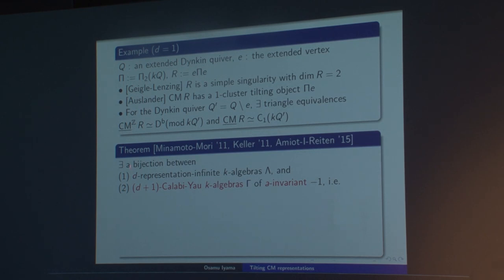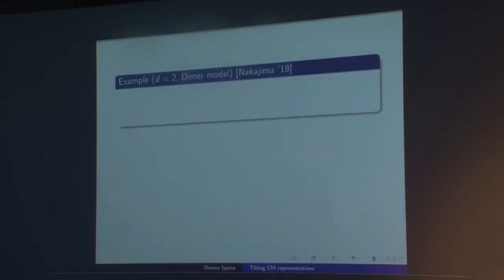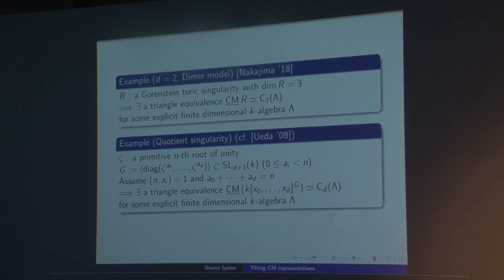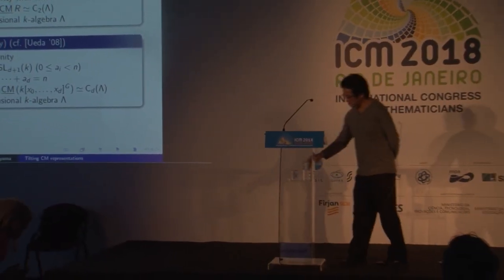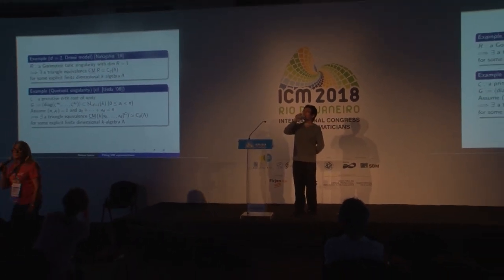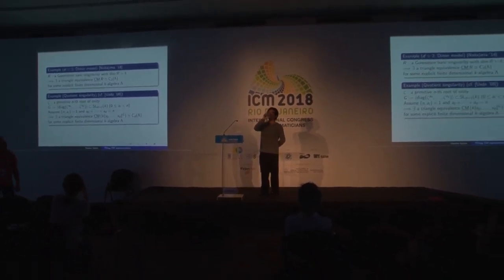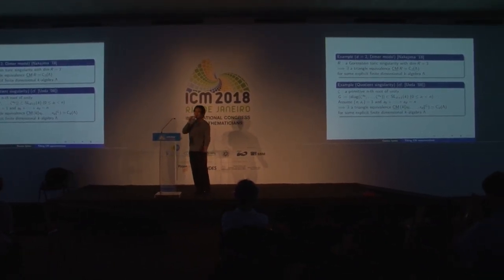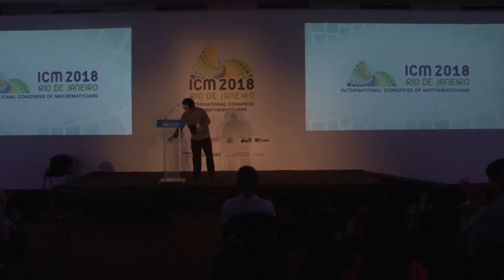For example in the case d=1, Q is an extended Dynkin quiver, e is the extending vertex, and R is a simple singularity in dimension 2, as known by Geigle-Lenzing. By our result, for the Dynkin quiver Q' obtained from Q by removing the vertex e, we have these triangle equivalences. There are more examples obtained using a bijection between d-representation infinite algebras and certain Calabi-Yau algebras of Gorenstein parameter −1. Thank you very much.